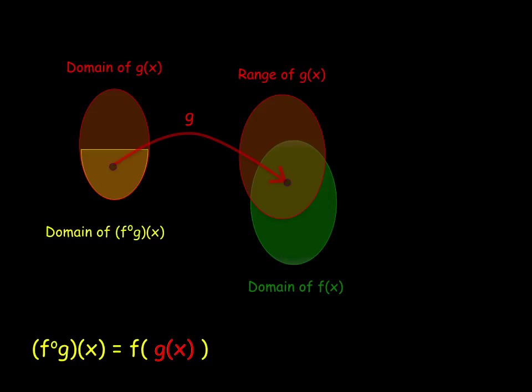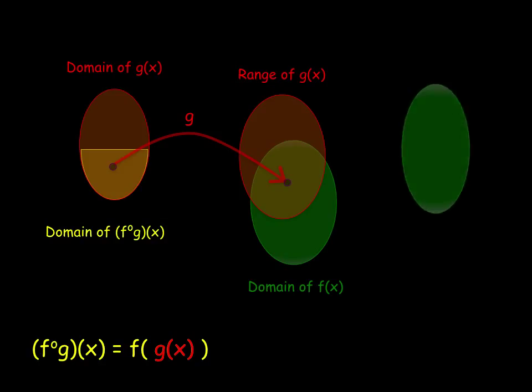That is, G must take this element to the intersection of its range and the domain of the function called F, because now F needs to take this element to its range.